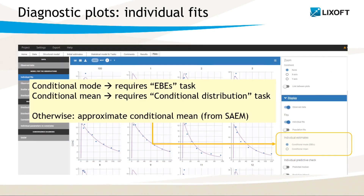Depending on which tasks have been run, different individual estimates are used in the diagnostic plots. In the display options, there are several possibilities. The conditional mode is available if the EBE task was run, and the conditional mean after running the conditional distribution task. If neither of them was performed, then the plots use the approximated conditional mean.